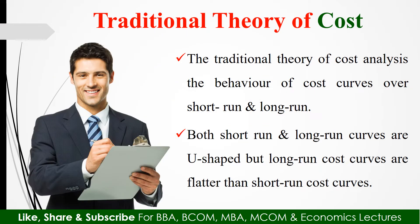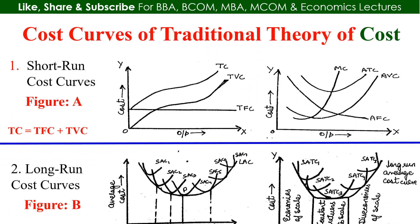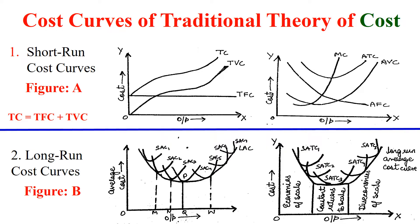The traditional theory of cost analyzes the behavior of cost curves over the short run and the long run. Both the short run and long run cost curves are U-shaped, but the long run cost curves are flatter than the short run cost curves. In the short run, total cost is a combination of total fixed cost and total variable cost. Whereas in the long run there are no fixed factors of production, or we can say that all the factors are variable.